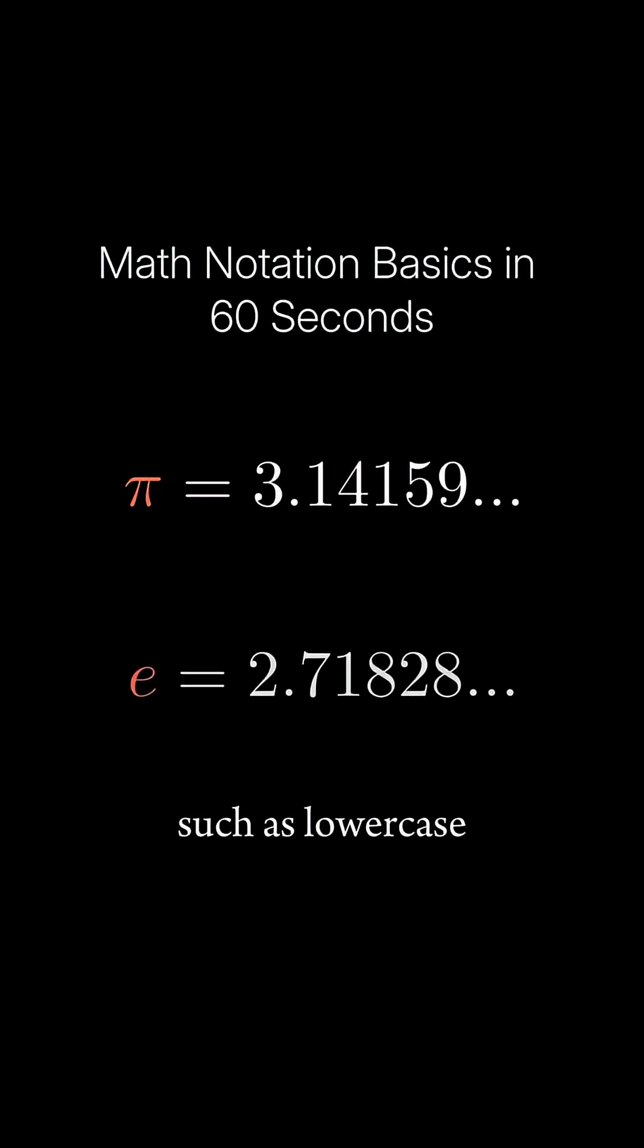Certain symbols, such as lowercase pi and Euler's number e, are reserved for special constants you will see all over mathematics.